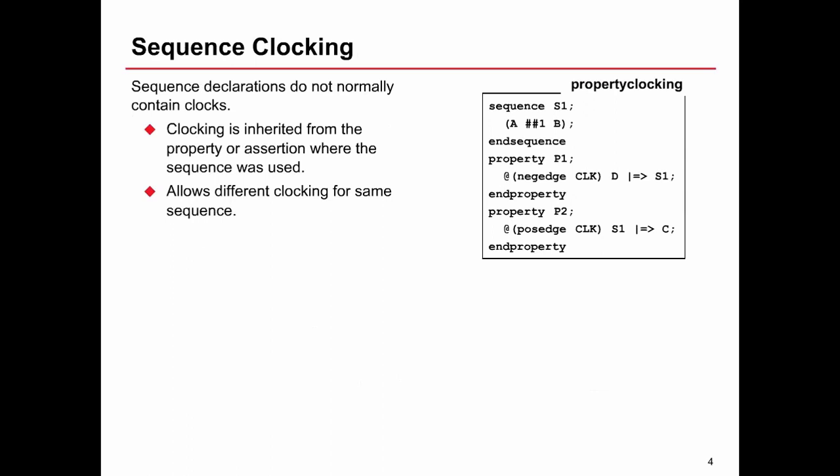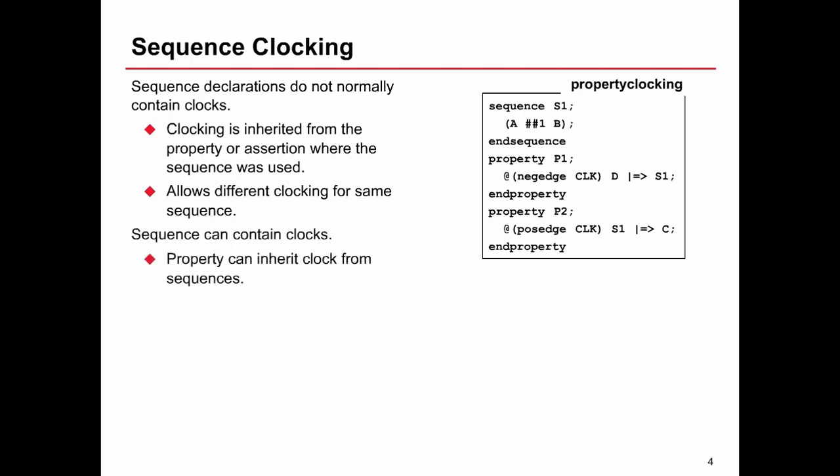When sequences are defined, typically they are not defined with a clock, because that makes them less reusable. We want to decide later, when we use the sequence, what clock it should use. If we don't define a clock for the sequence, the clocking is inherited from the property or assertion where it is used. For example, sequence S1 has no clock. In property P1, the sampling event is negedge clock, and in property P2, the same sequence S1 uses posedge clock instead.